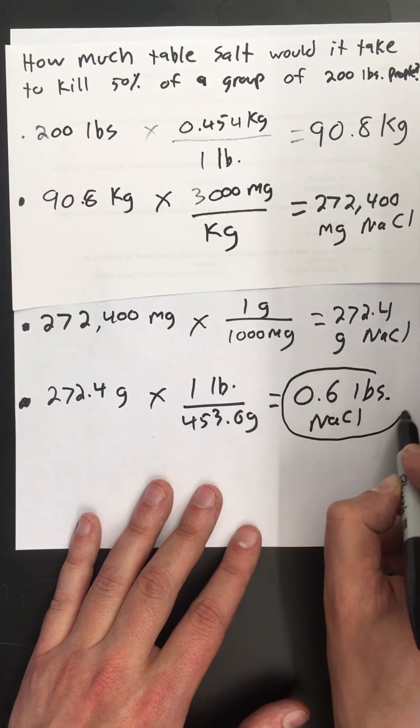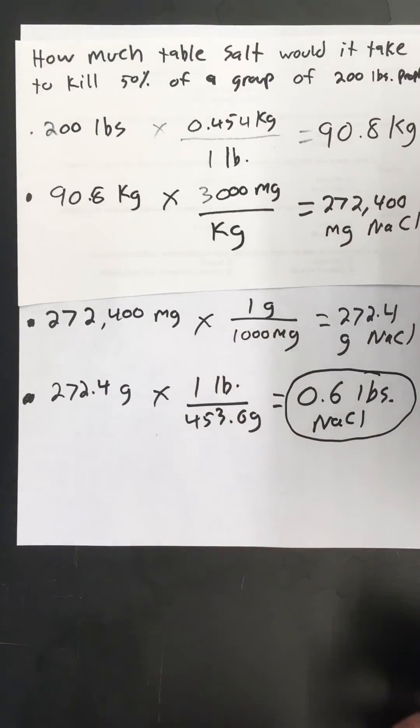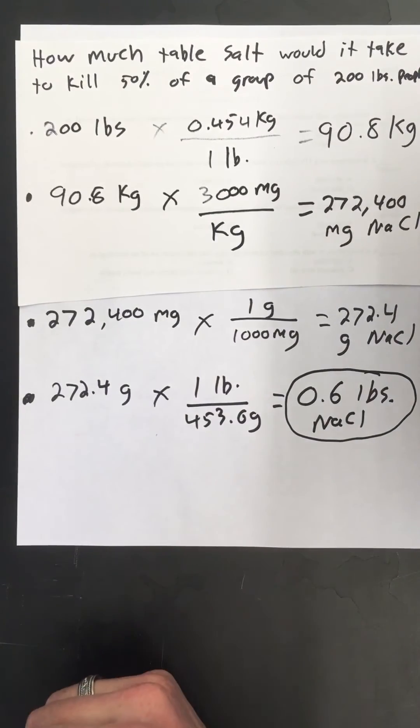Okay so that should give me how many pounds of table salt it would take to kill me. So about 0.6 pounds. All right so basically if I ate a little over half a pound of salt I'd stand a pretty good chance of dying, me being 200 pounds.